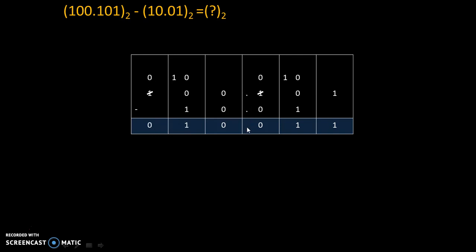And we will write down that fraction point over here. Okay. So, this will be our final answer. Therefore, we will summarize our answer as: 100.101 to the base 2 minus 10.01 to the base 2 is equal to 010.011 to the base 2.